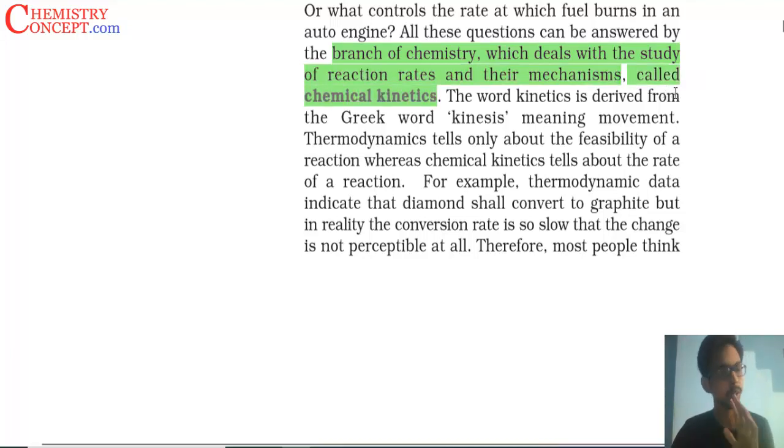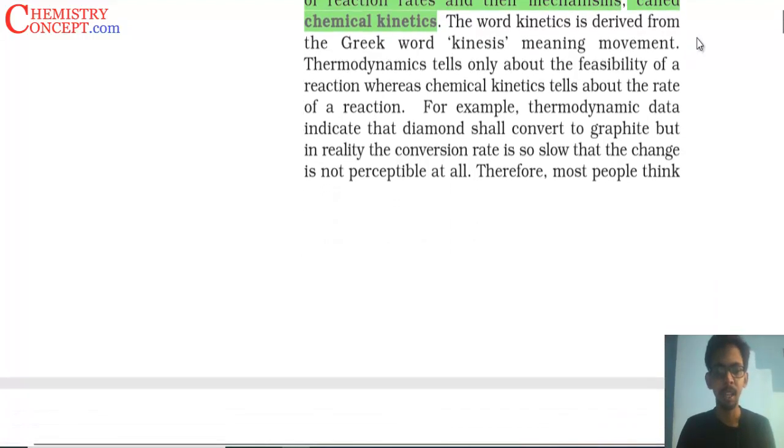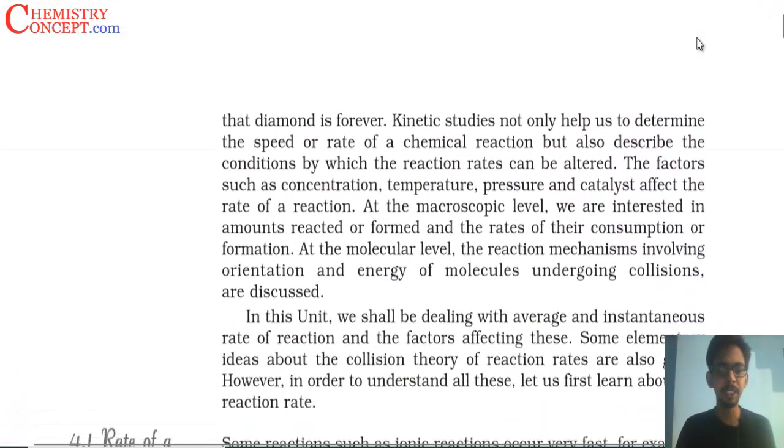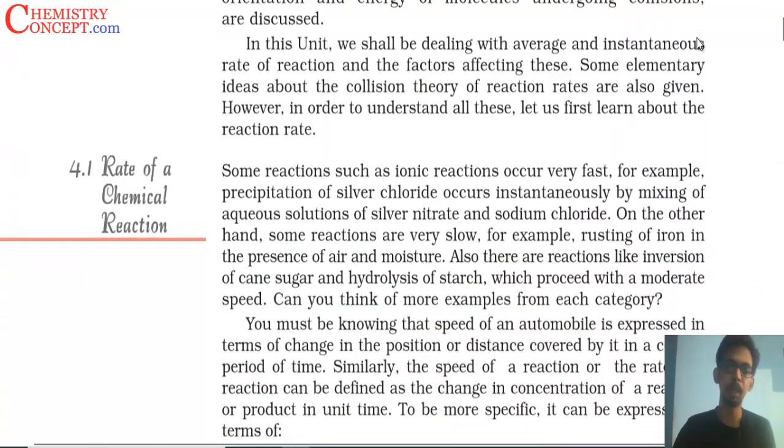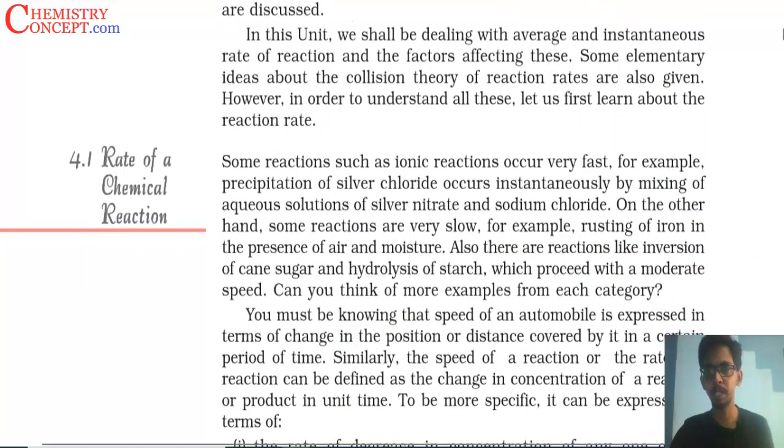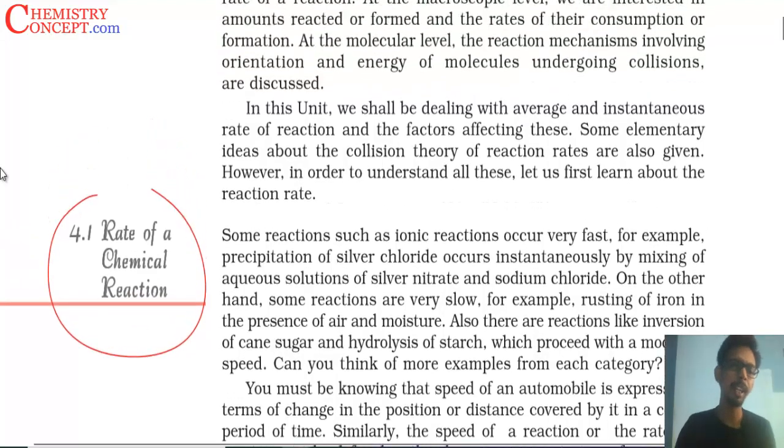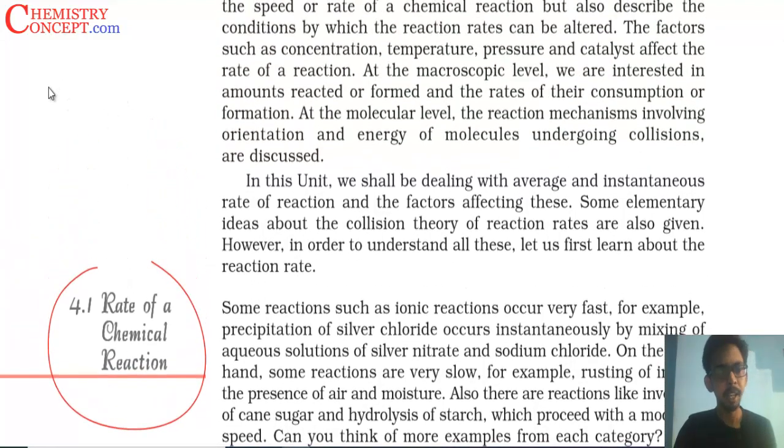The branch of chemistry which deals with the study of reaction rates and their mechanism is called chemical kinetics. No one is going to ask this. So the first thing which is most important in the chapter is rate of a chemical reaction. How slow or how fast a chemical reaction takes place. Let's say, a reaction in which molecules of A are converting to molecules of B.